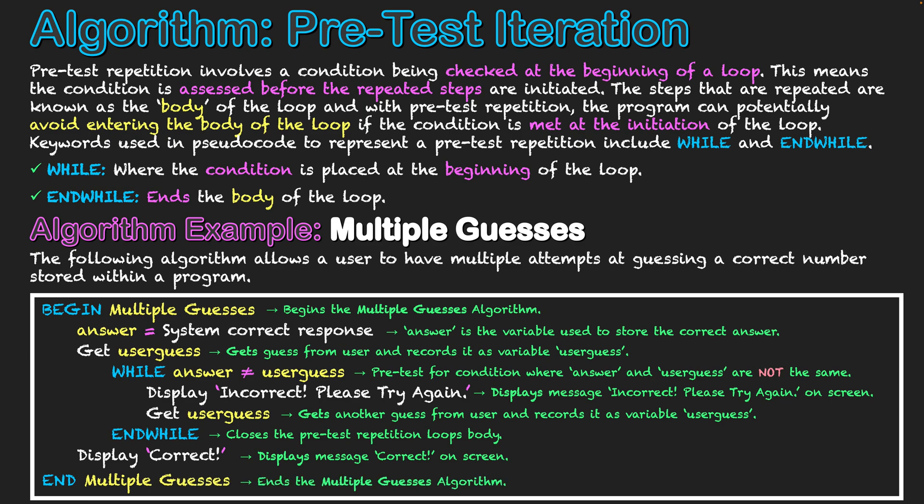I hope this video is giving you an understanding of pre-test iteration in that it is a loop where certain steps will repeat potentially multiple times until the condition is satisfied. It differs from post-test repetition in that those body steps of the loop can be avoided if the condition is met straight away, allowing the actual repetition to be more streamlined and potentially avoided. So the user and the algorithm can be more efficient in going on with what needs to be done if the condition has been met straight away.